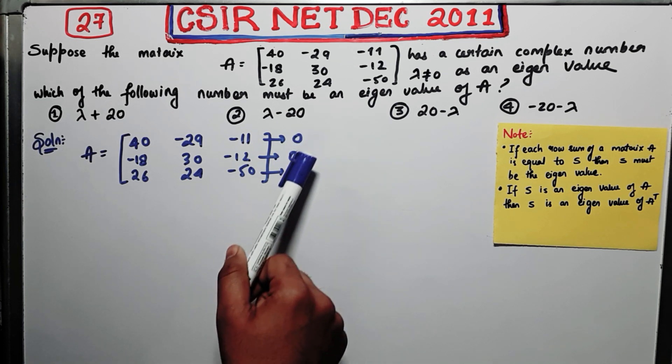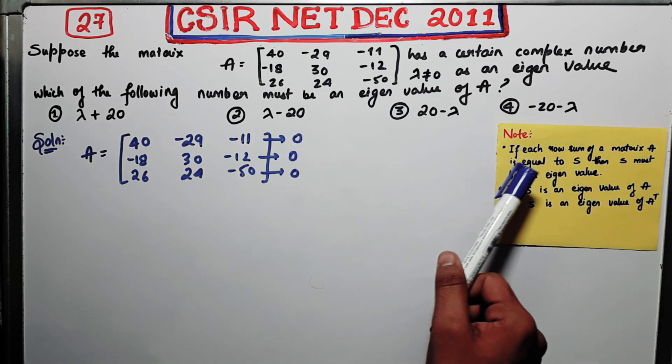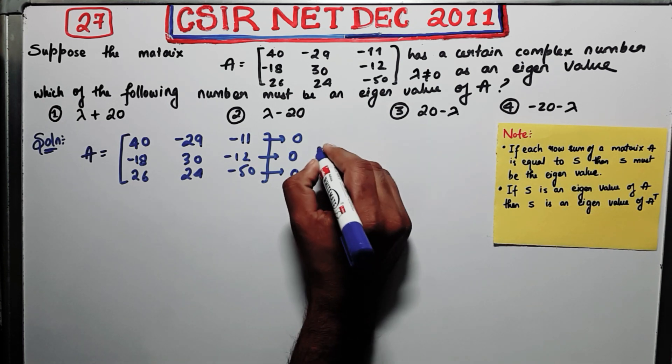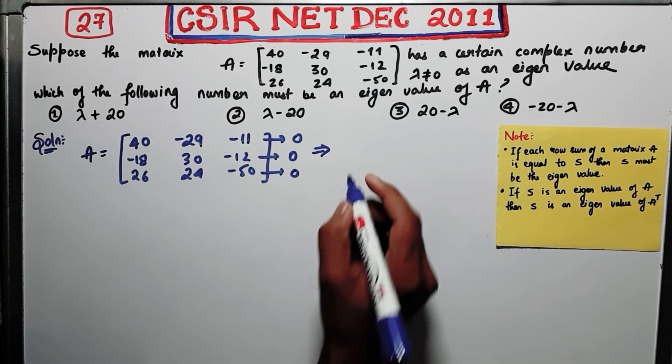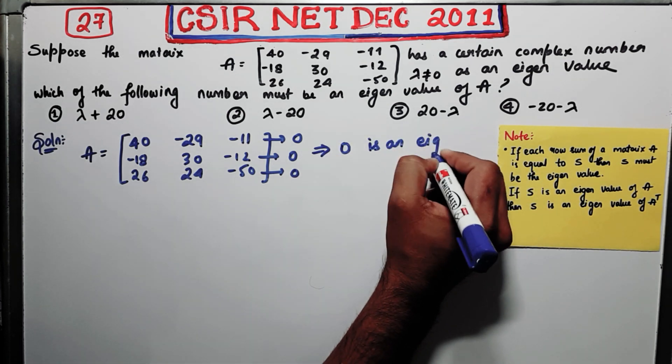Now since each row sum is equal, it says if each row sum of a matrix is equal to S where S is a certain number, then S must be an eigenvalue. So from here, by using this note what you are concluding, zero is an eigenvalue.